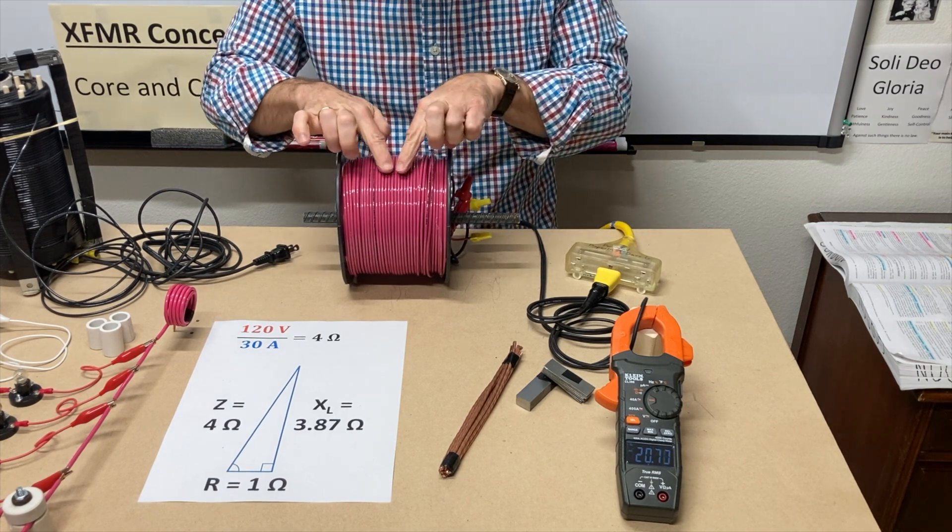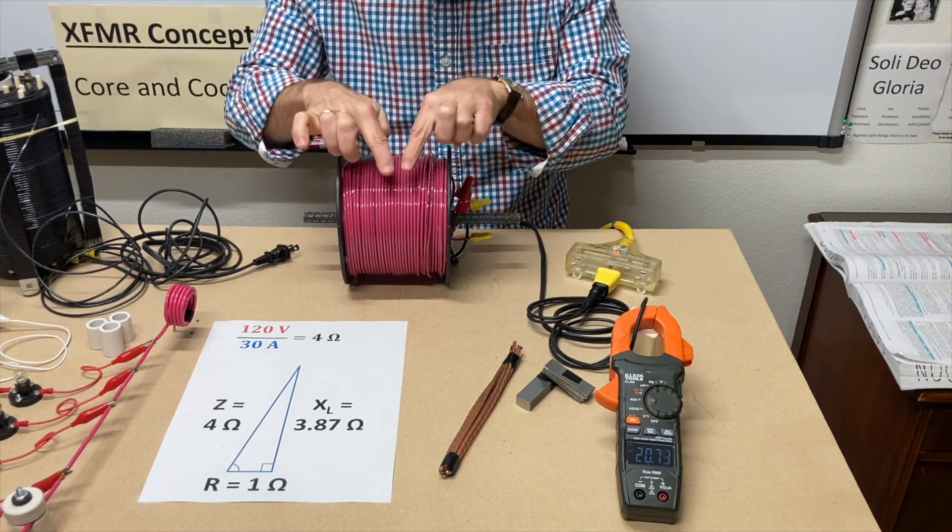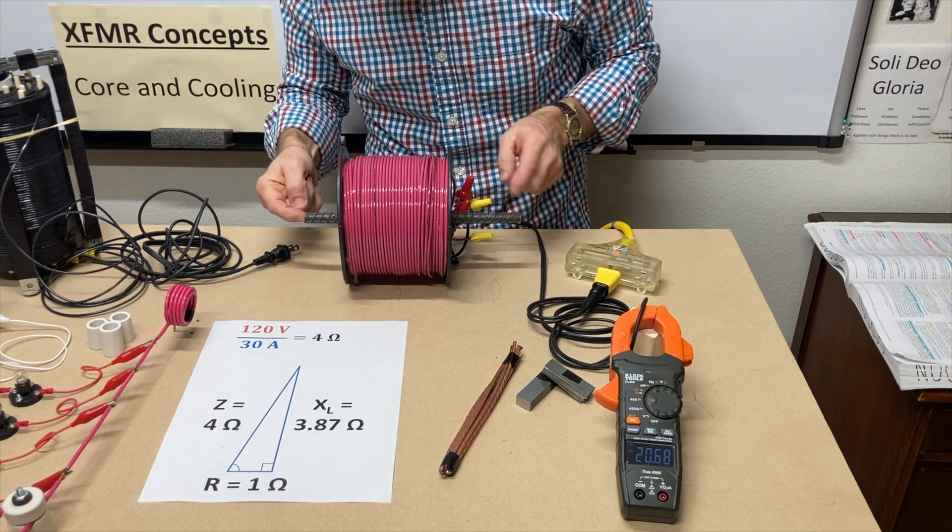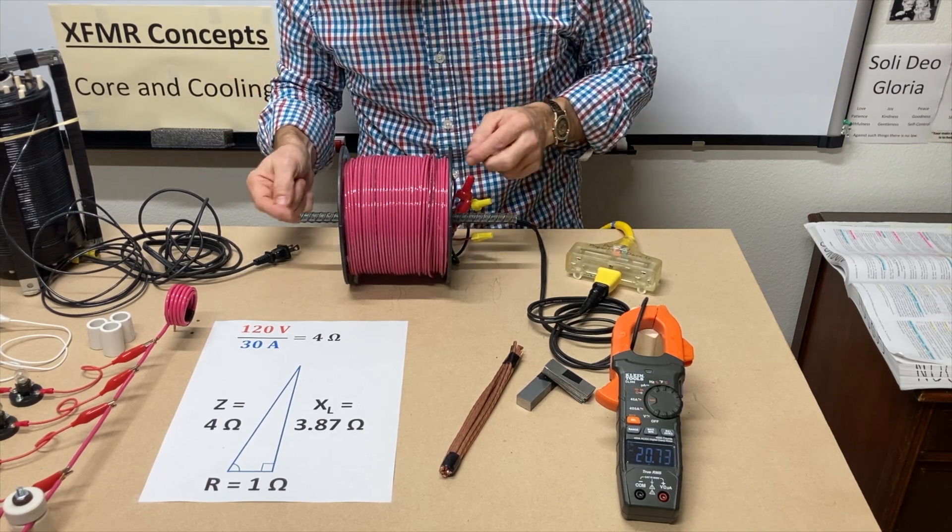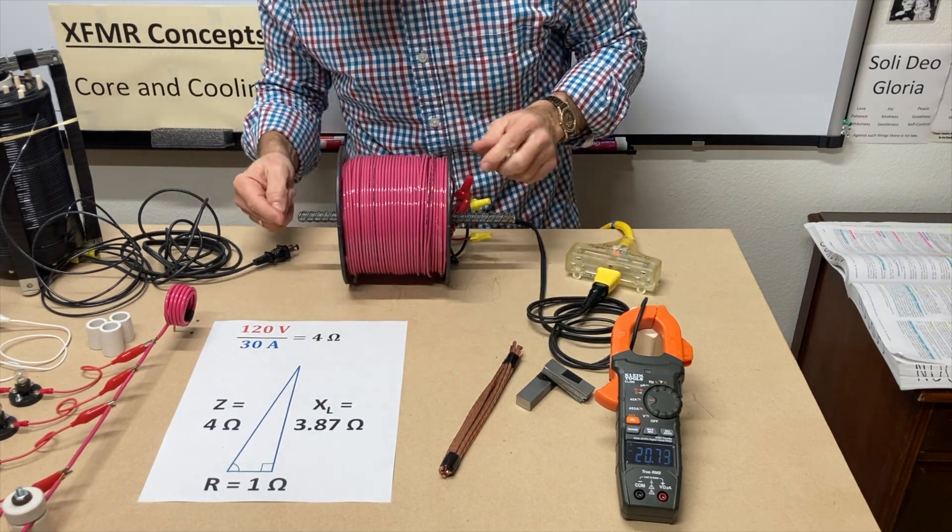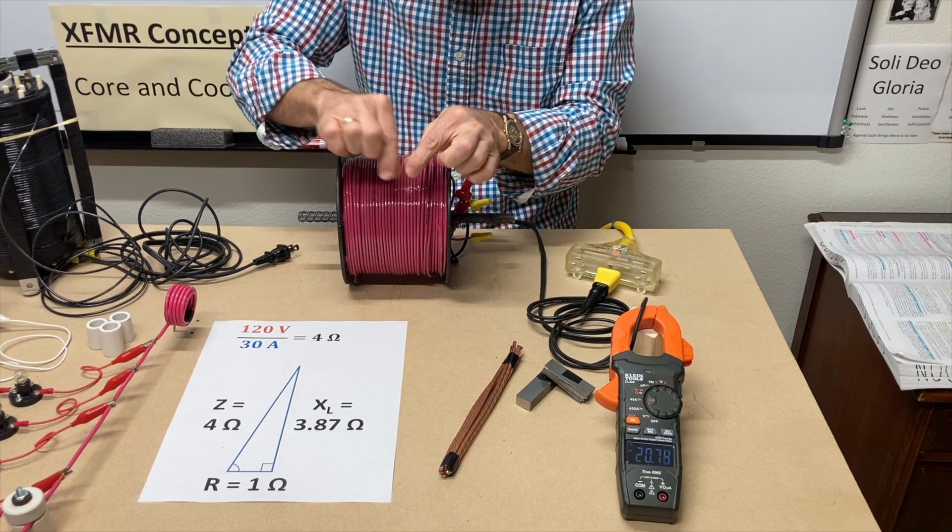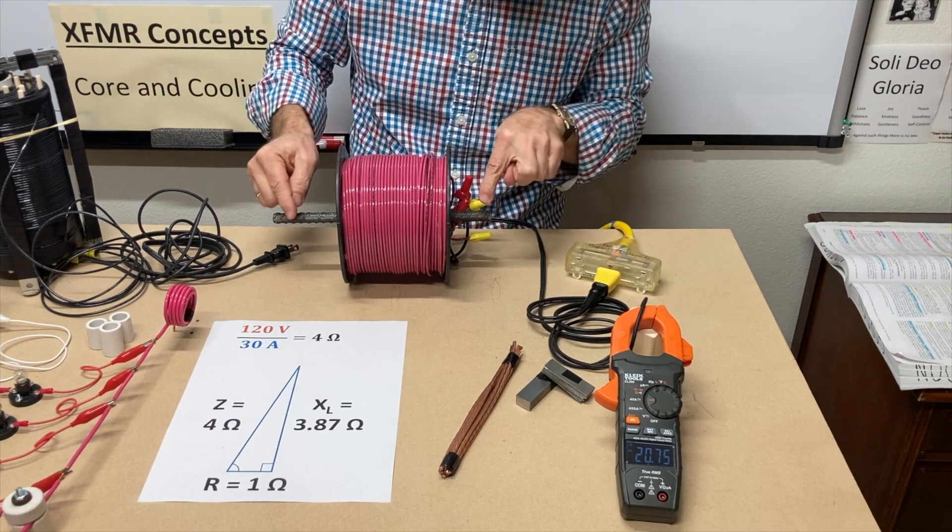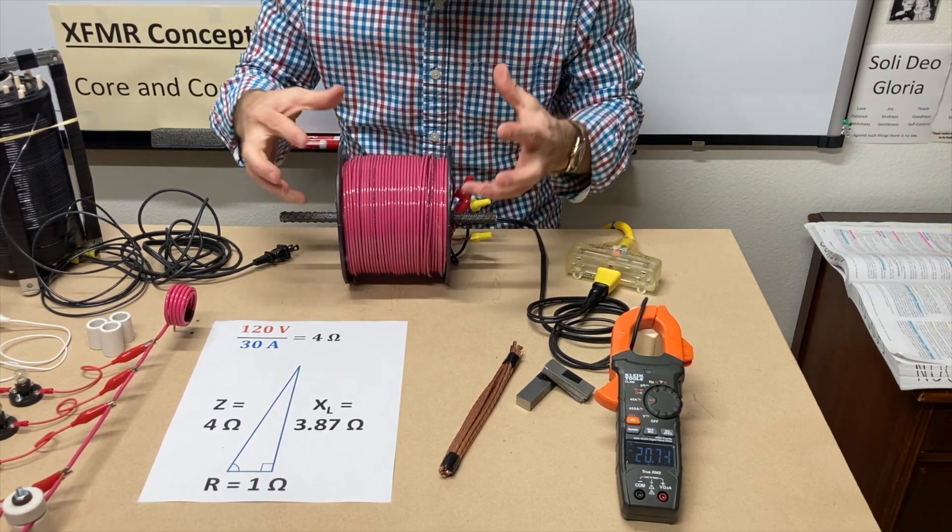Well, the magnetic flux lines will go through the air around this wire, but they travel so much better in a ferrous material. It just means an iron-based material. And so when you have that there, those flux lines, it's like a special highway for the flux lines, and they can travel much better.